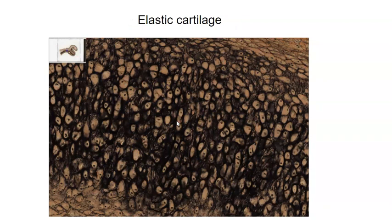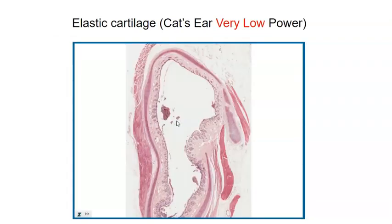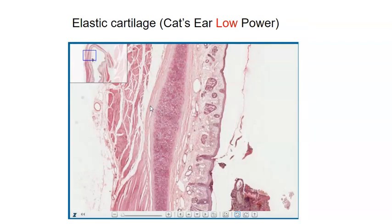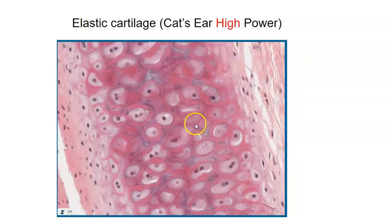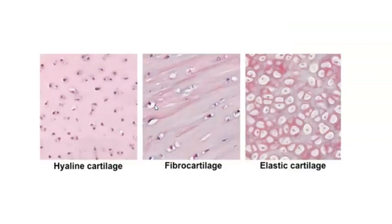Elastic cartilage is found in only a few places. The ear is one of them. Under low power you can't tell much, but zooming in you begin to see chondrocytes, and further still it looks somewhat like hyaline cartilage — but it's not quite glassy, and elastic fibers are visible running through it. To summarize: hyaline cartilage has a glass-like extracellular matrix; fibrocartilage has visible fibers; and elastic cartilage has lots of cellularity and elastic fibers in between.